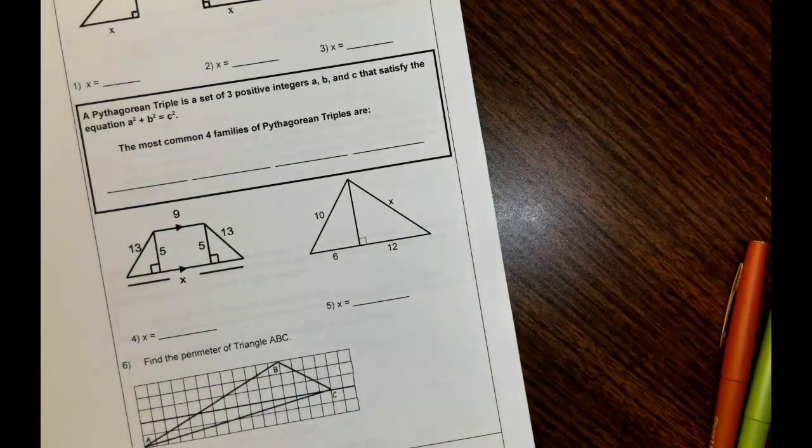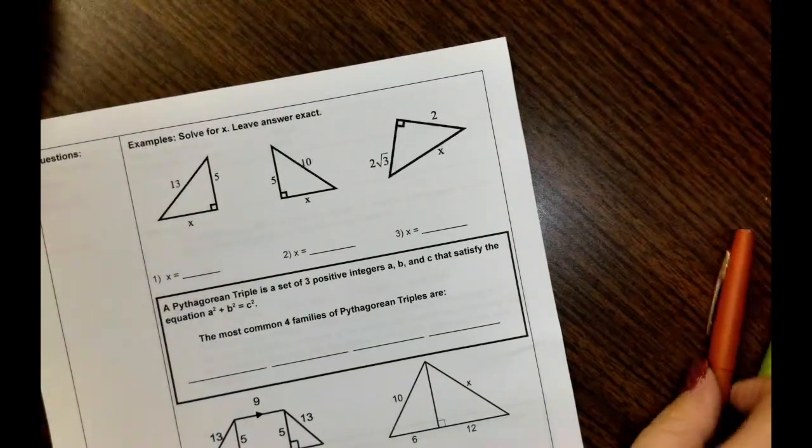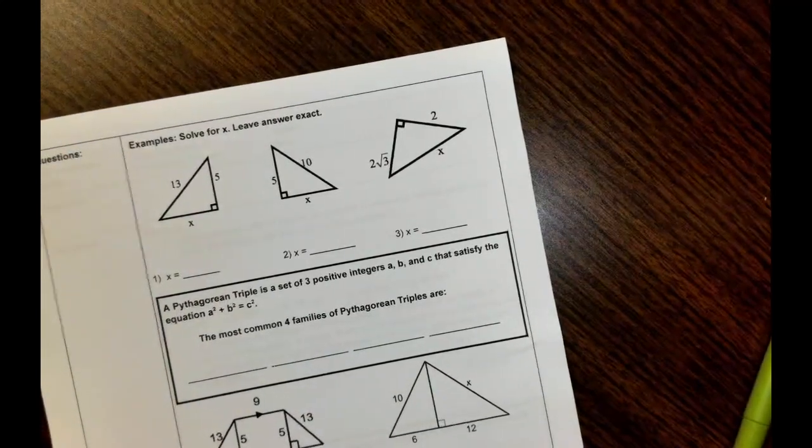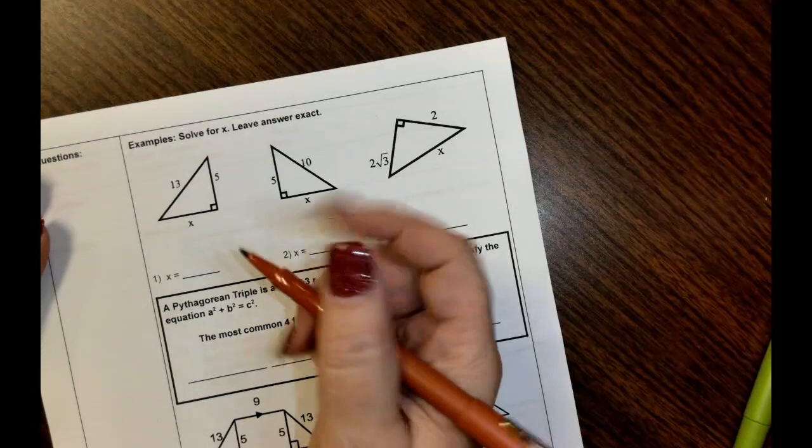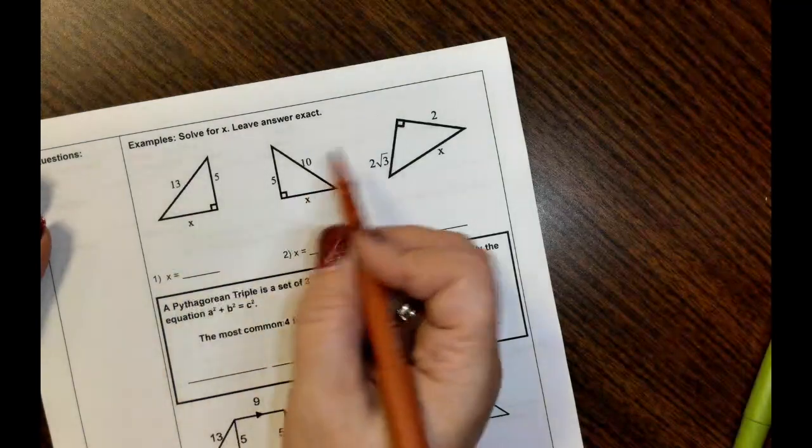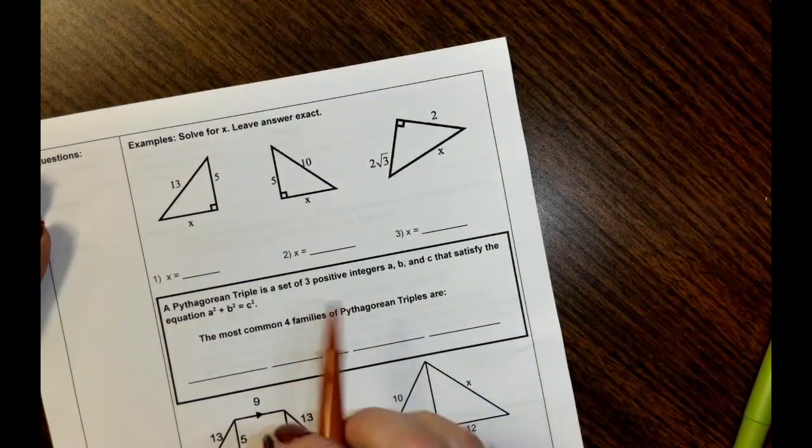So some examples with Pythagorean theorem. Solve for X. So you have to decide every time which is the hypotenuse. Always look for it. It's not always going to be on the same side. You can see all three of these triangles are rotated around where the right angle is in a different place.